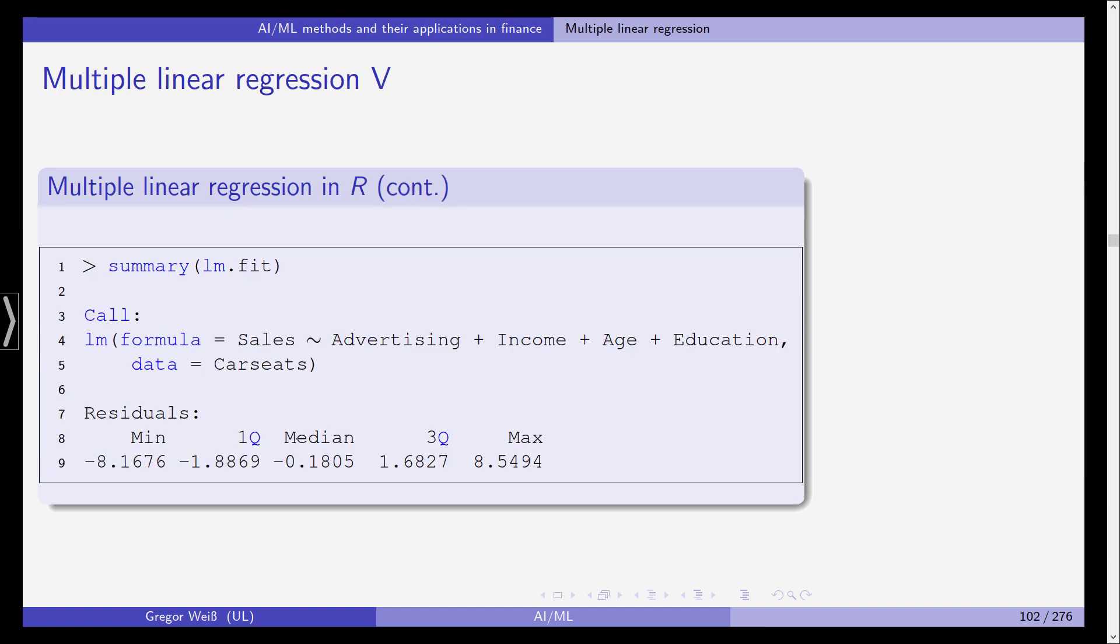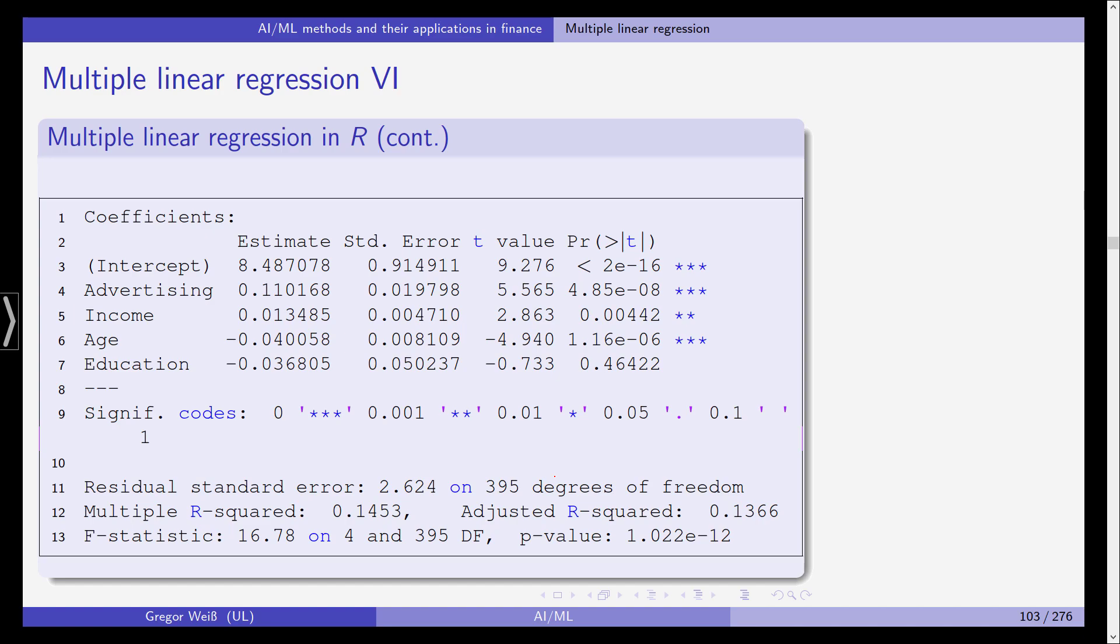By using the summary command on LM.fit, we can see what the result is. So the function call was formula: sales is explained by using advertising, income, age, education, and using car seats data. The residuals are shown here. So we can see that this is the median, the first quartile, the third quartile, and the minimum and the maximum residuals after having fitted the model.